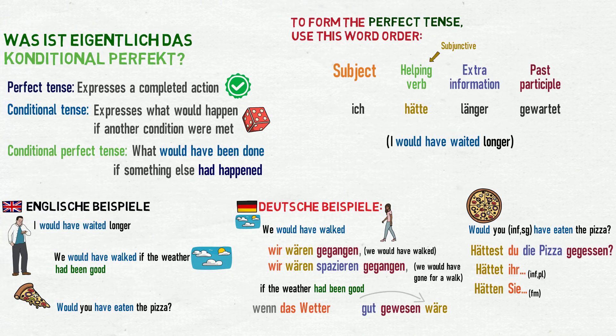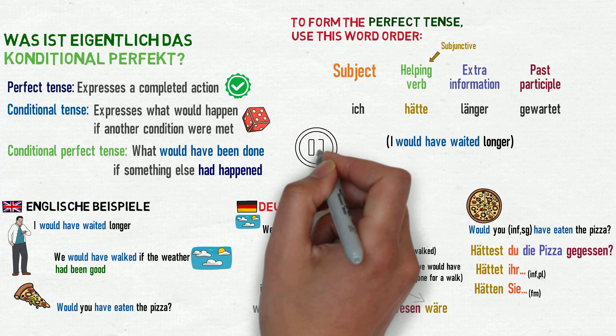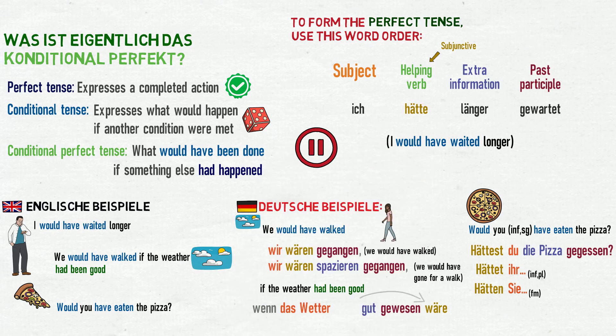And so that's how to form the conditional perfect tense. It's a very simple tense if you already know the subjunctive forms of haben and sein, so familiarity with these will definitely help. It's a good idea to pause the video now to recap how to change a perfect tense sentence into a conditional perfect tense sentence, just by changing the helping verb from the indicative to subjunctive, as well as the complexities of combining this with a subordinating conjunction or boot word such as wenn.